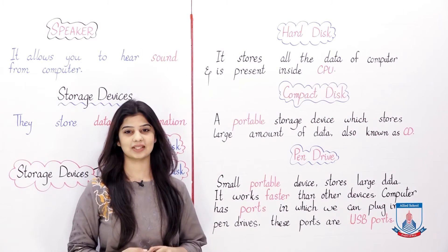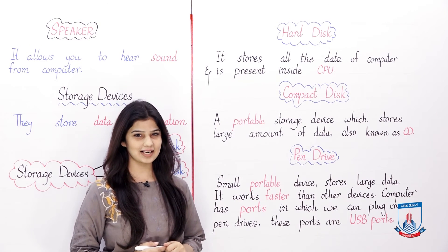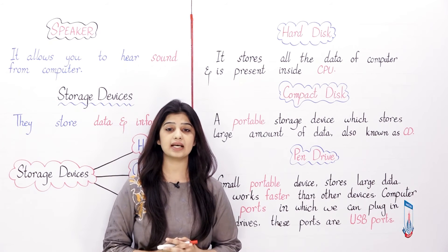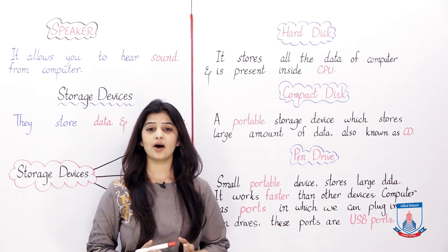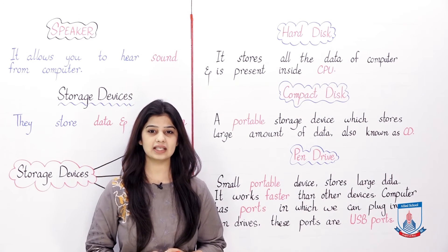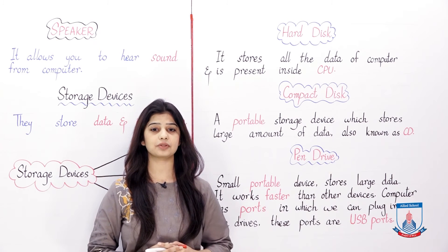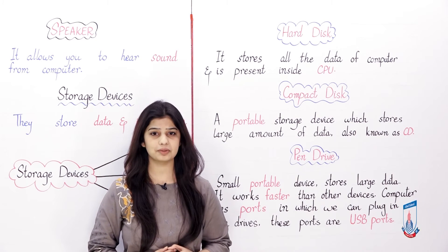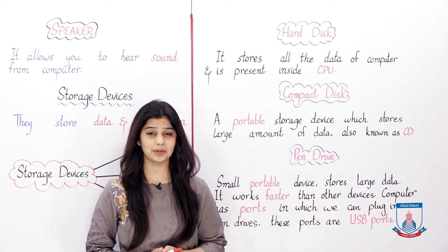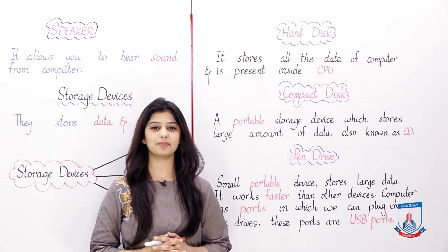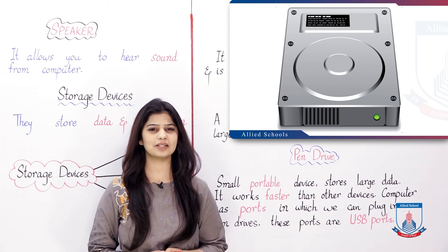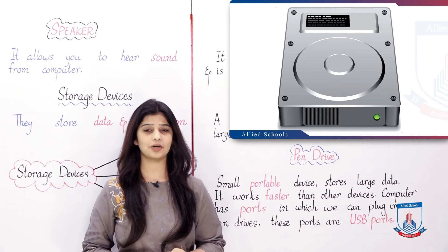The first storage device is Hard Disk. It stores all the data of the computer and is present inside the CPU. Hard disk is stored in the CPU. Where information needs to be stored in the computer, it is stored in the hard drive. The hard drive is fixed inside your computer and cannot be easily removed. You can see a picture on your screen — your hard disk looks like this. It is in your CPU and stores your data.